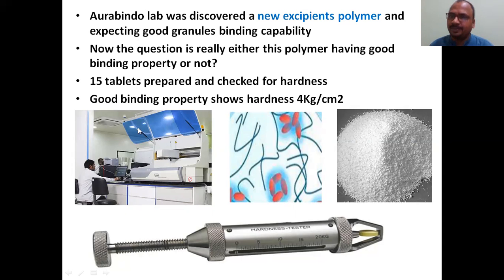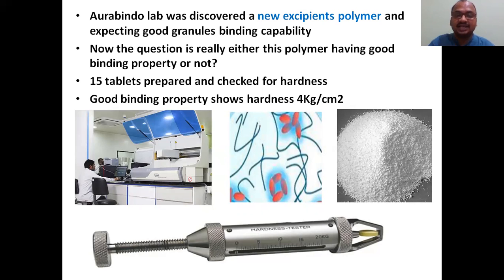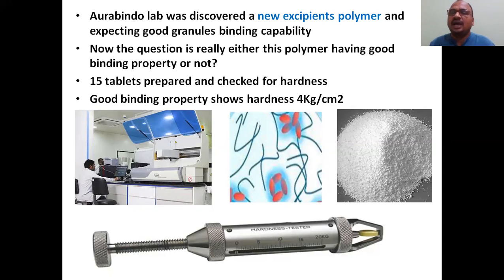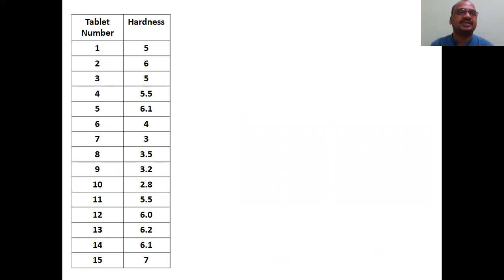15 tablets were prepared and checked for hardness. Good binding property requires a minimum hardness of 4 kg — meaning at least 4 kg of pressure is needed to break the tablet. If it is only 1 or 2 kg, the binding is poor and the tablet is easily breakable. Our target is to apply the Sign Test to determine if this polymer has good binding.